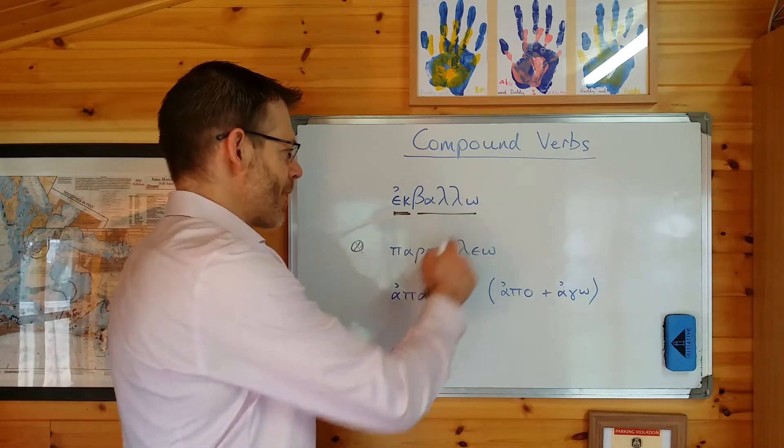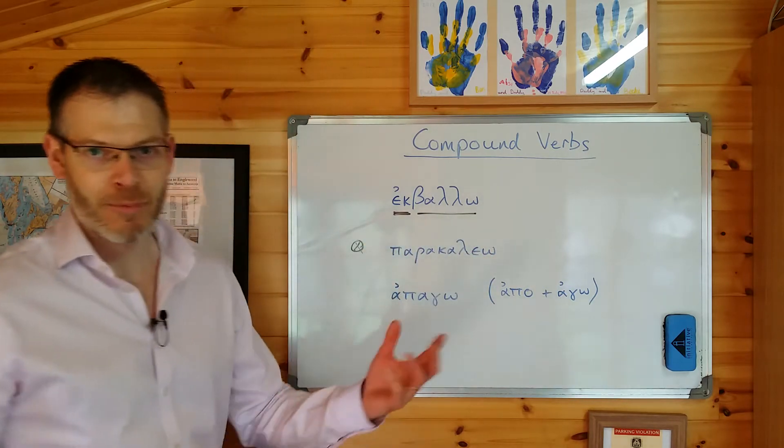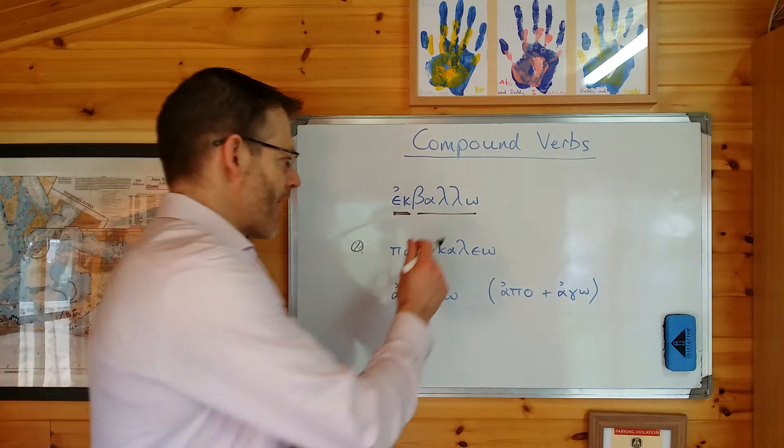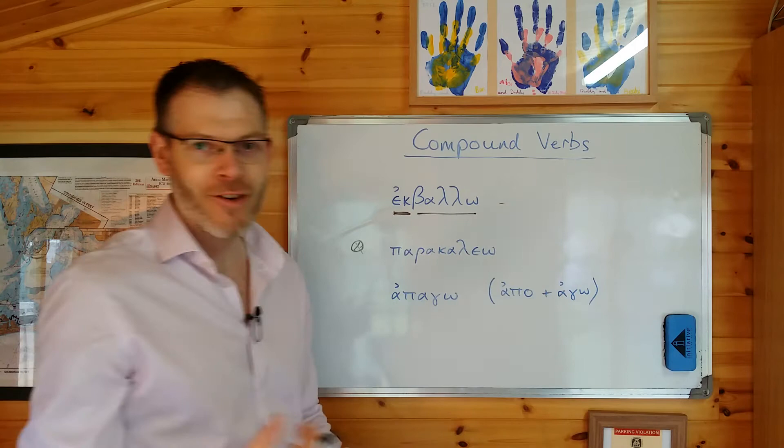So here's an example. Ballo means I throw. Ek is a preposition meaning from in the sense of out from and the meaning of ek balo means I drive out or I throw out.